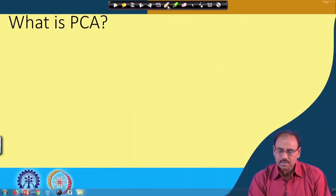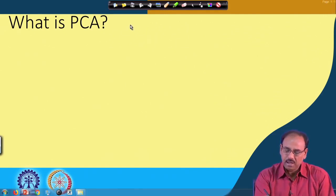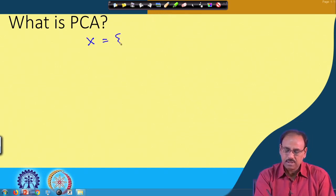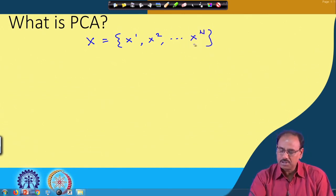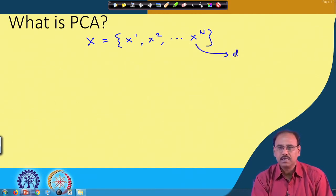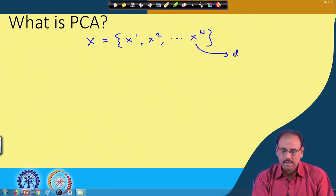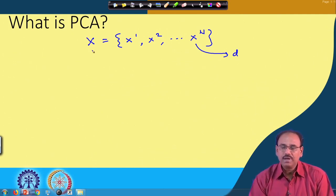What we presented in the previous class is that given a set of input vectors x, where x is a set of vectors x1, x2 up to xn, having n number of population where each vector x is of dimension d. That means there are d number of components in the feature vector. Then first you find out the covariance matrix from this set of input vectors.